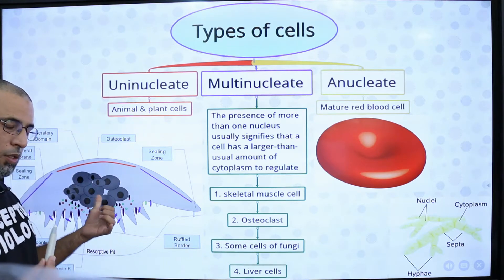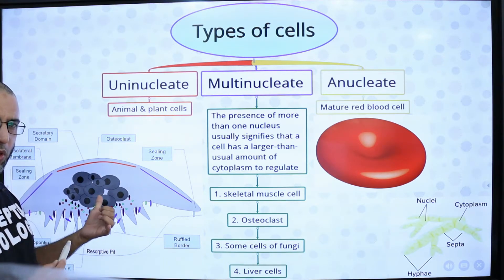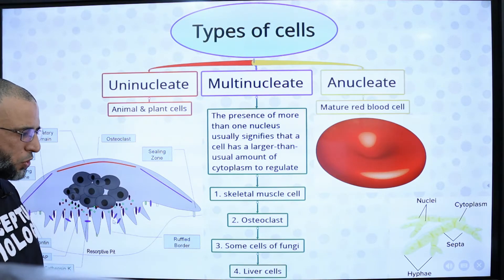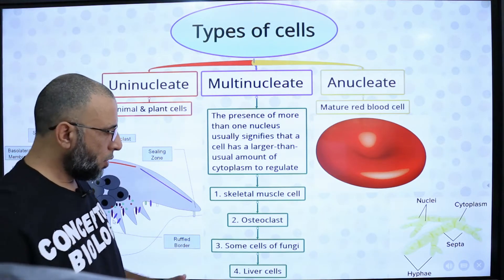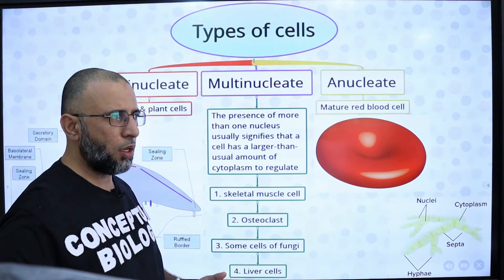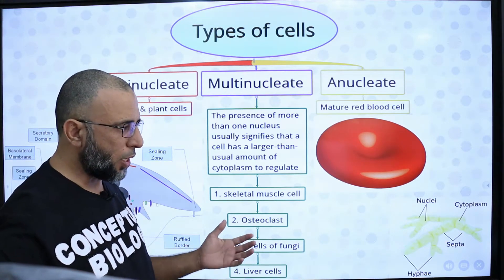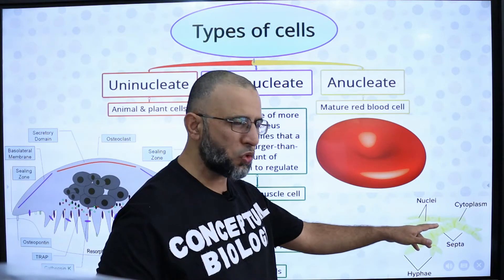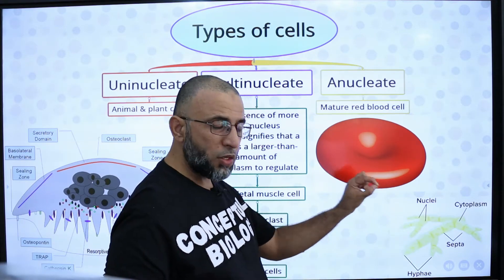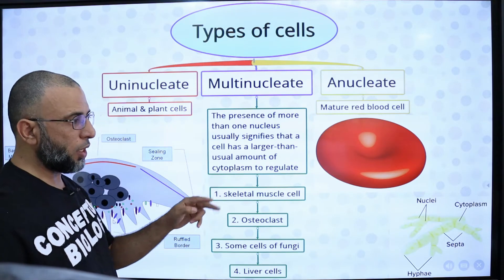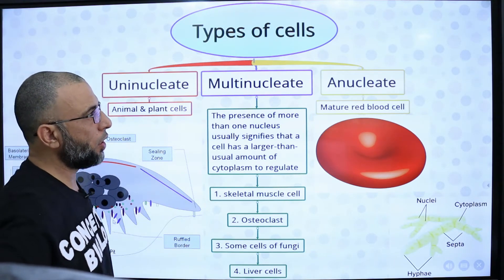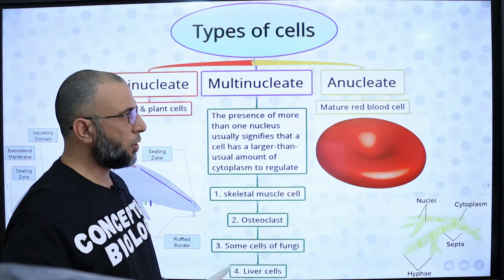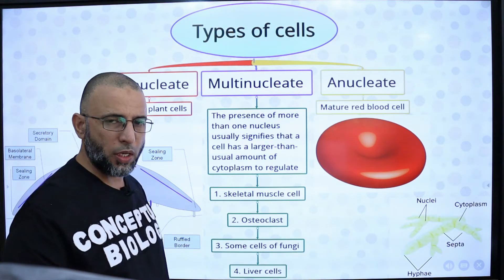In osteoclasts, the number of nuclei varies from three to four, and in some cases up to 50 nuclei are present. Some cells of fungi are also multinucleate. The plant body of fungi is a thread-like structure called hyphae, and each cell has two nuclei, making them binucleate. Anucleate cells are without a nucleus — for example, erythrocytes, or red blood cells.